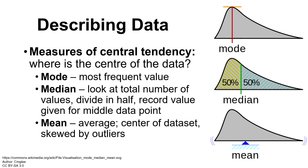With descriptive statistics, one of our main things we look at is measures of central tendency — basically asking, where is the middle of our data? Where is the center of all of the measurements that we took? When you think of finding a center point for reporting a single value for a collection of measurements, say we do our measurements of height, we probably report the average.